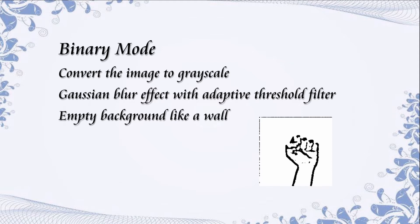In order to simplify the picture, binary mode is used to preprocess the captured image and highlight edges. First, convert the image to grayscale. Then apply a Gaussian blur effect with an adaptive threshold filter. This mode is useful when you have an empty background like a wall.